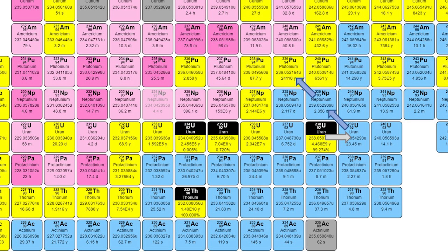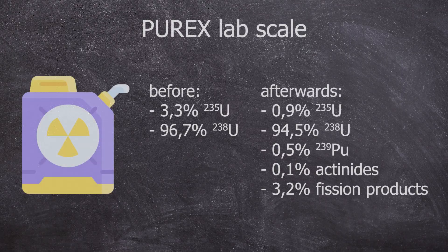It continues from there, but that's not the topic for today's video. Initially we had 3.3% Uranium-235 and 96.7% Uranium-238, and afterwards we have less Uranium-235, about half a percent of Plutonium-239, other transuranics, and a bunch of fission products.